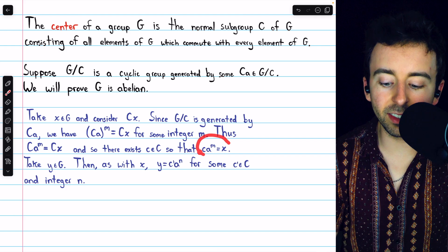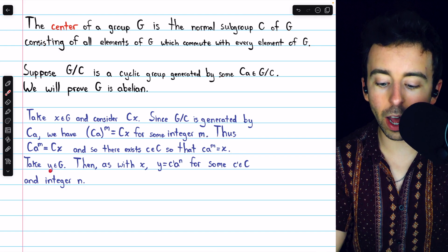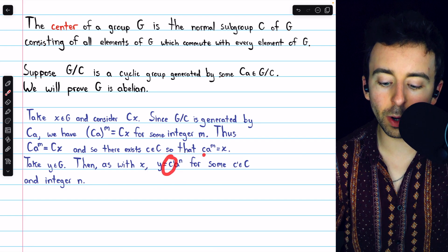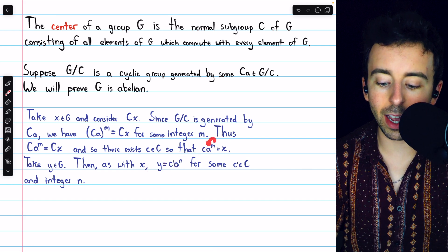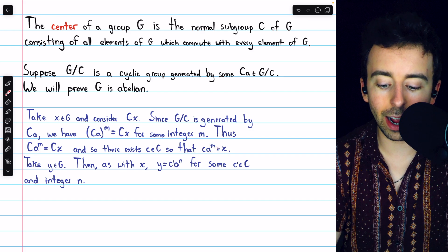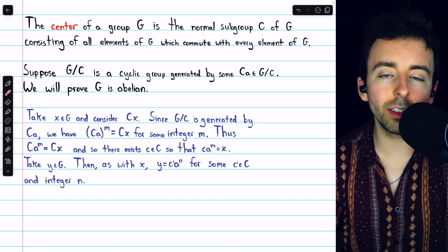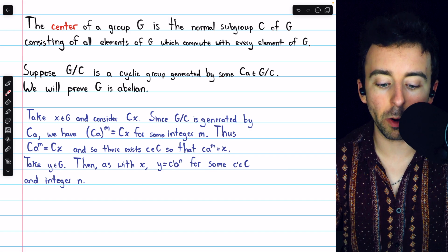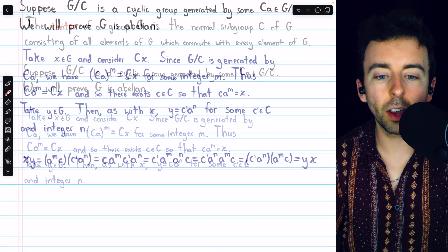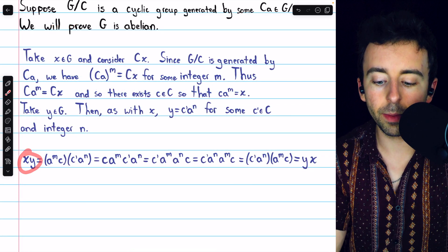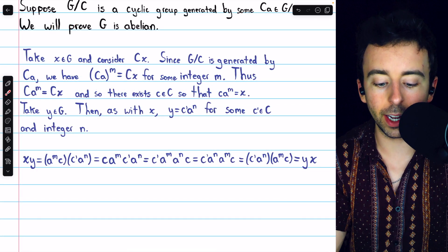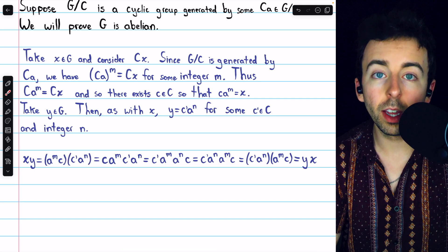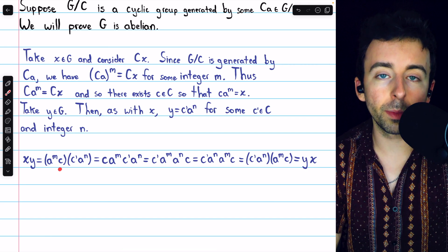Knowing that to be the case, we can now take a second element from G, let's call it Y, and by applying all the same logic, we arrive at Y equals c prime A to the N for some element c prime from the center and some positive integer N. Now we're going to use these equations to show that X and Y commute. Remember, X and Y are just arbitrary elements from the group G. Considering X times Y, then applying these equations, we can rewrite it as A to the M times c times c prime times A to the N.